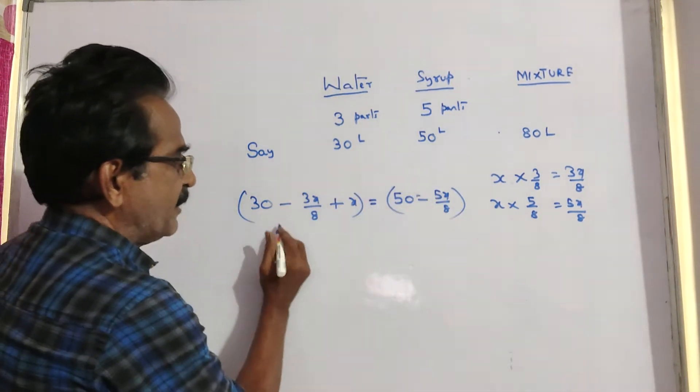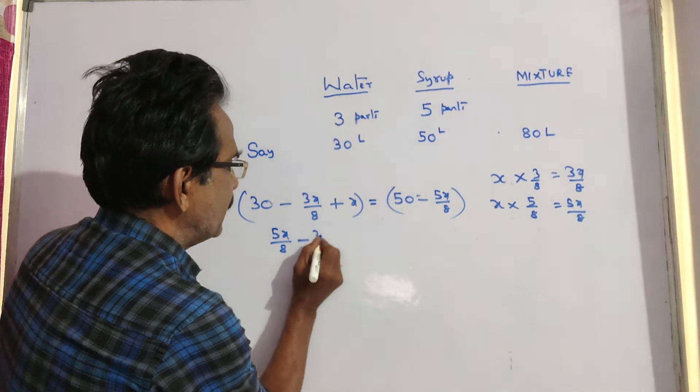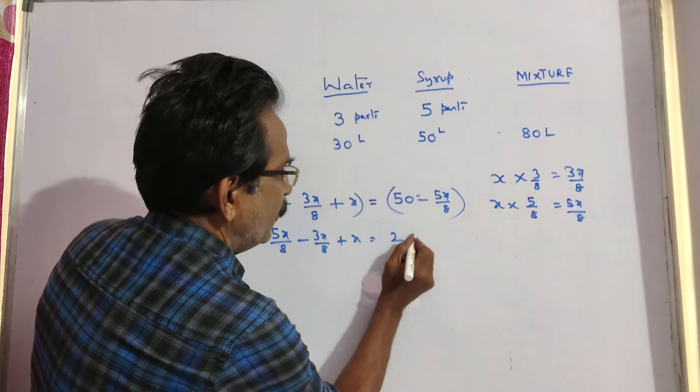So, this minus 5x by 8 comes to this side. 5x by 8 minus 3x by 8 plus x is equal to 50 minus 30, 20.